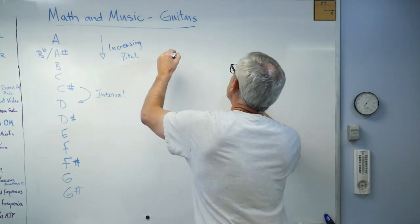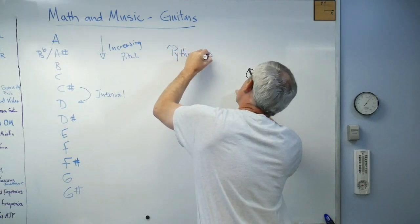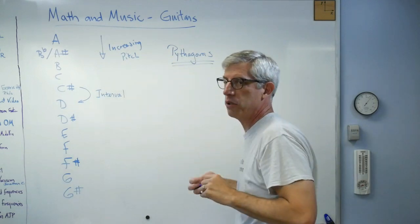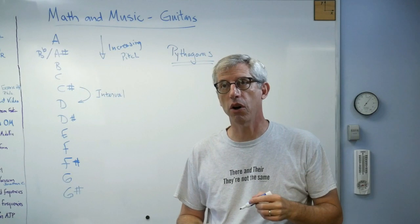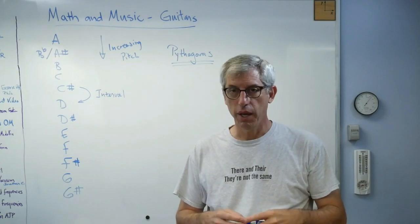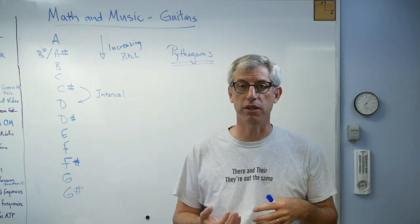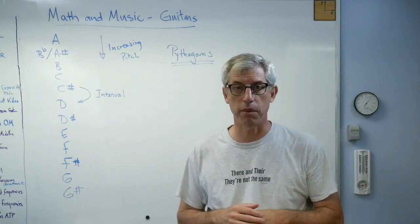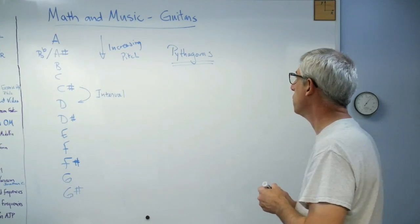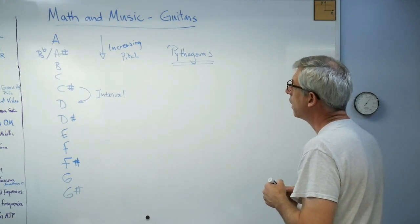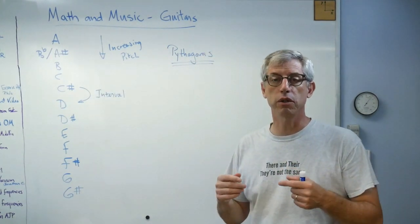Now, the person who is credited with coming up with what we call Western musical scales is Pythagoras. Pythagoras is what we would now call a cult leader. And so things that are attributed to Pythagoras aren't always his. One of his followers sometimes came up with it. Strange guy, but had some great ideas. And one of them is that music could be defined in terms of ratios of small integers.